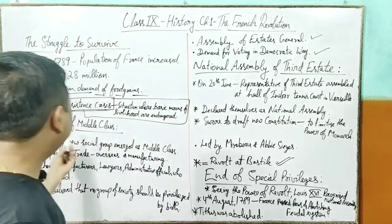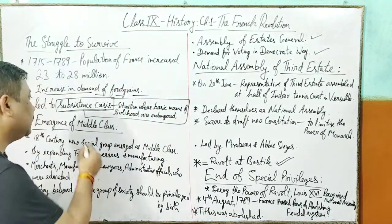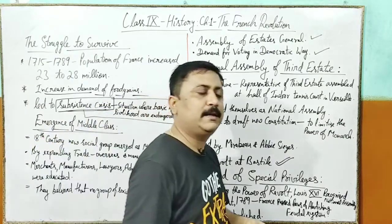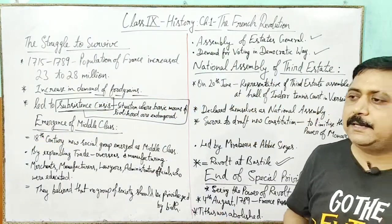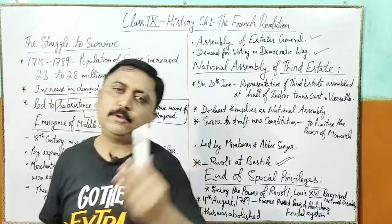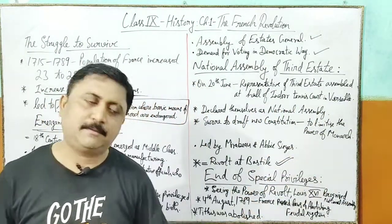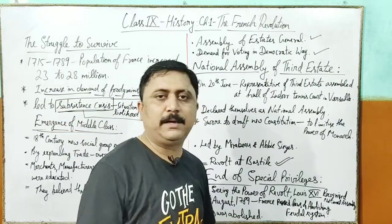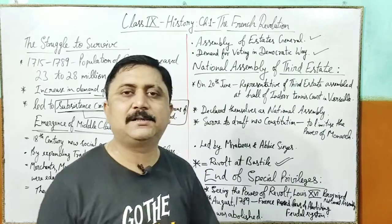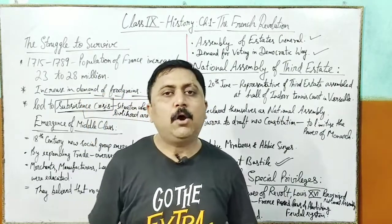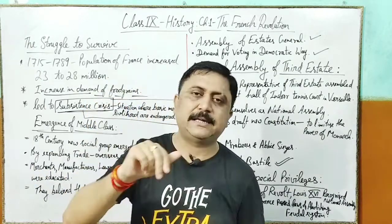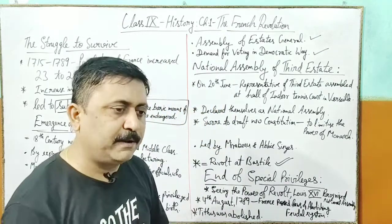Second part is emergence of middle class. Abhi tak estates mein society bati thi - teen parts mein: First Estate (clergy), Second Estate (nobility/royal family), aur Third Estate (common people - lawyers, merchants, traders, doctors, sab). Privileges jo thi woh First aur Second Estate ko thi - they were having privileges on the basis of their birth, ki woh is class ko belong karte hain. Yeh ek extreme condition thi.